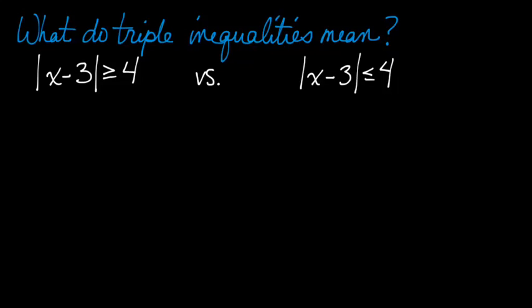I want to talk about what triple inequalities really mean. I've written here two absolute value inequalities, and you can see that the only difference between the two is the direction of the sign.